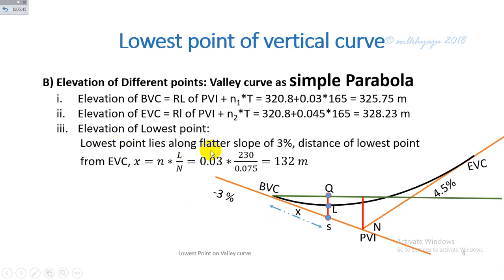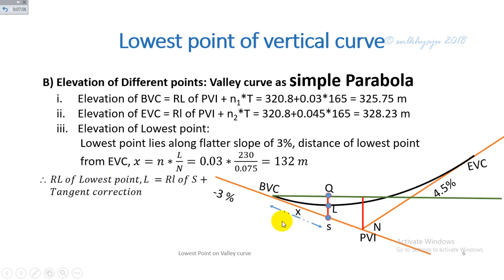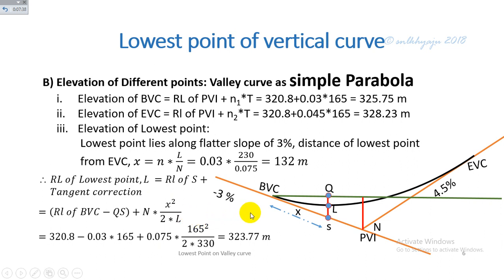The lowest point lies along the flatter slope of 3%. The distance of the lowest point from the beginning of the vertical curve is calculated as X = N1·L / N = 132 m. The RL of the lowest point L equals the RL of the starting point minus the grade correction plus the tangent correction N·x² / (2L), calculated as 223.77 m.